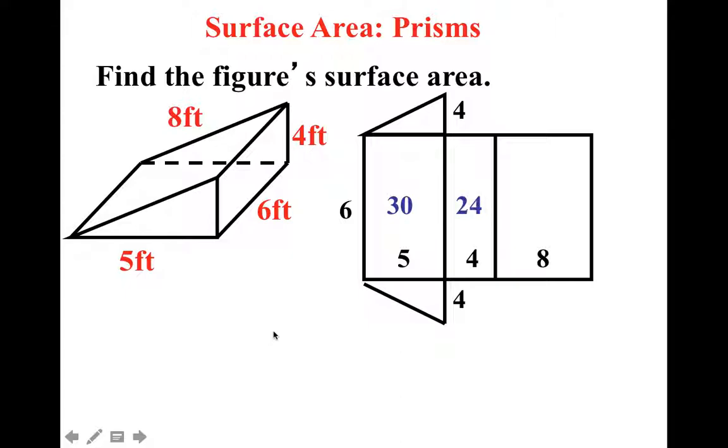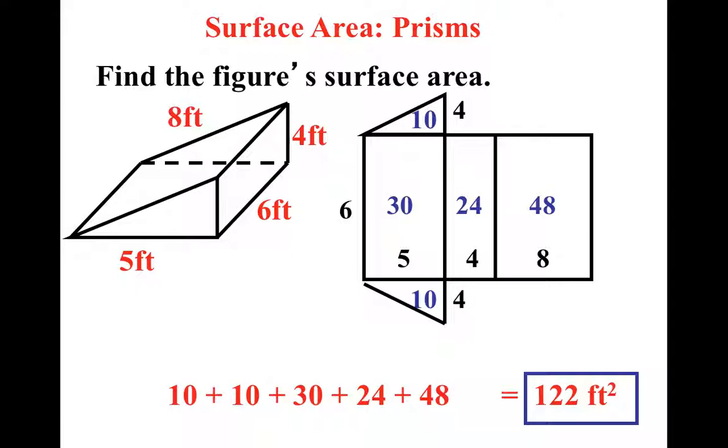The rectangles are probably the easiest to begin with. So I put those in. And then base times height divided by two. Five times four is 20. Divided by two is 10. Add them all up. Did you get it?